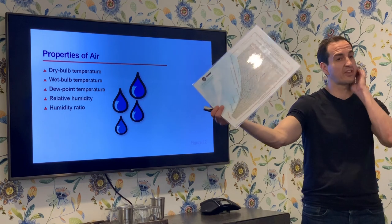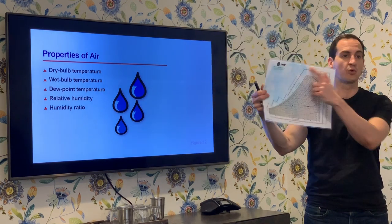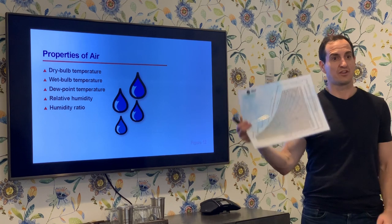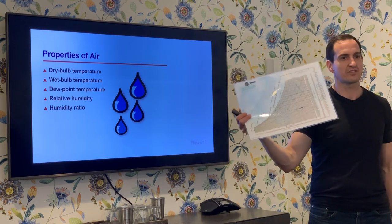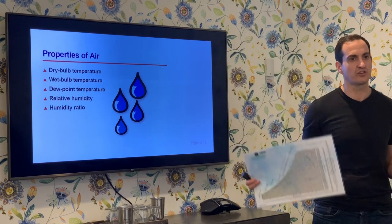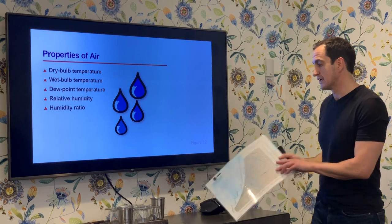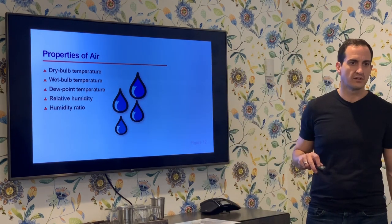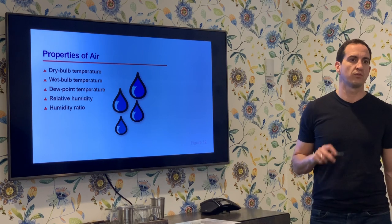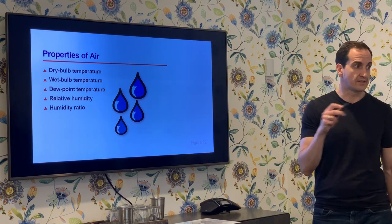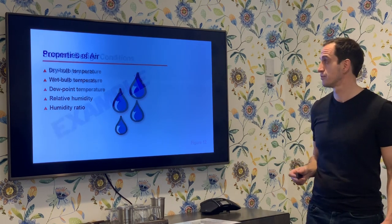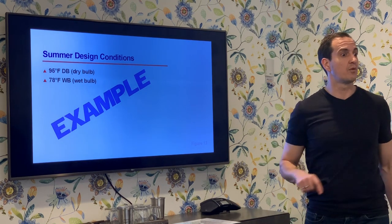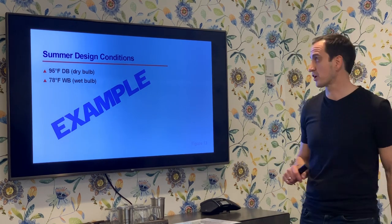We've talked about the entire chart — you know everything there is to know about finding your way around it. But things change: air changes, temperature changes, humidities change. Let's talk about what we can do with this information and apply it in our grows. Let's start by finding our way onto a specific point on the chart.